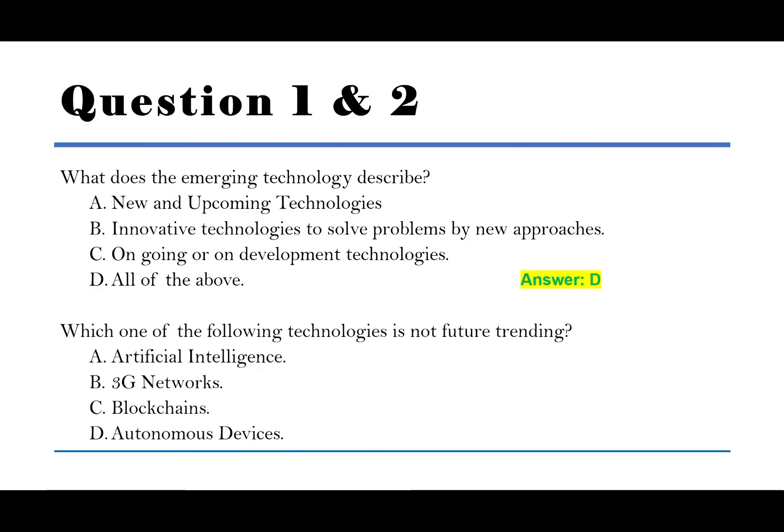Question 2: Which one of the following technologies is not a future trending or future trending technologies? A. Artificial intelligence. B. 3G networks. C. Blockchains. D. Autonomous devices. The answer is B, 3G networks.